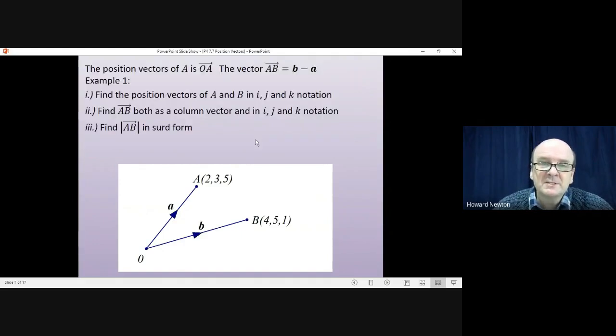OK, let's have a look at an example. So first of all, you're asked to write down the position vectors of A and B in i, j and k notation. Then find the vector from A to B, both as a column vector and in i, j and k notation.